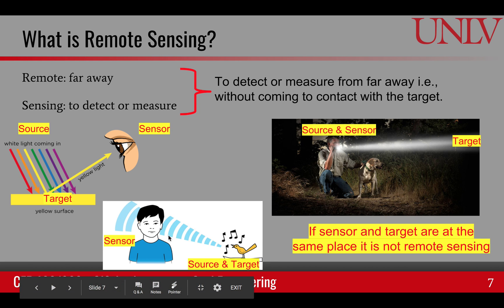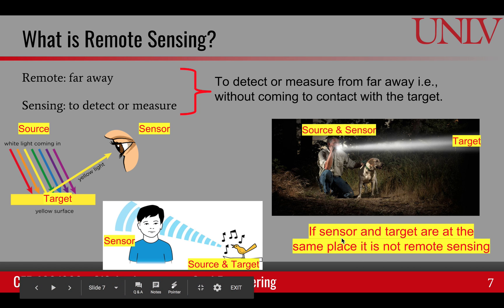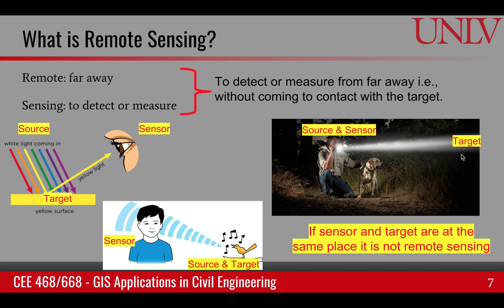The sensor can detect that energy to understand the target. There's another scenario where the source and sensor can be at the same place — for example, using your own flashlight to illuminate a target and then sense it. Of course, if the sensor and target are at the same place, that is not remote sensing — that is measuring in situ. For remote sensing, you have to be far away from the target.